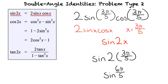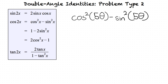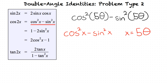Can we do an example problem involving a cosine double angle formula? Let's do the example problem: cosine squared of 5θ minus sine squared of 5θ. First, let's identify what form our problem is in. We can see from our table of double angle formulas that our problem is in the form of cosine squared of x minus sine squared of x, with x equaling 5θ.